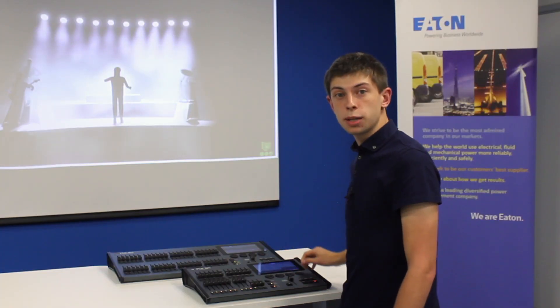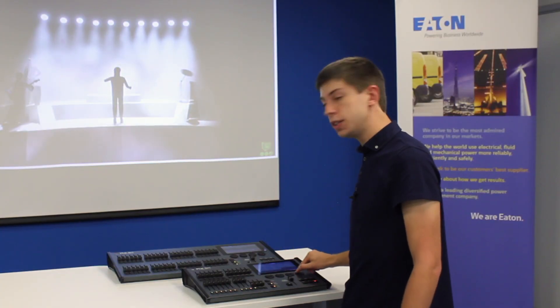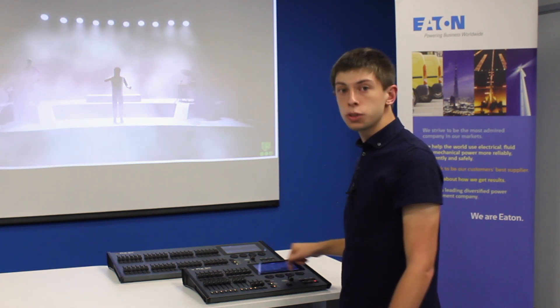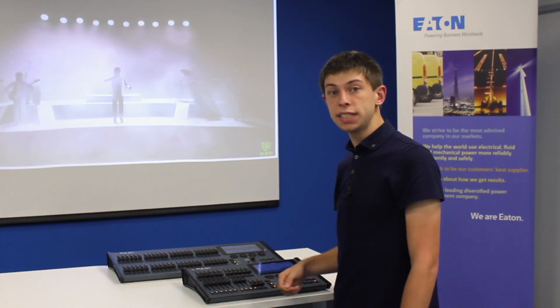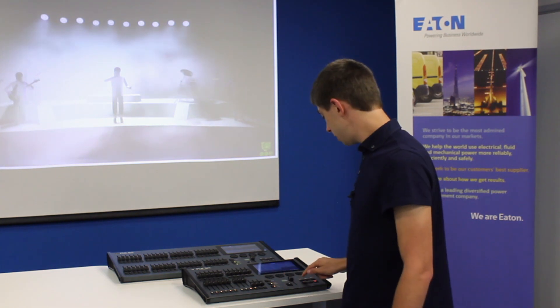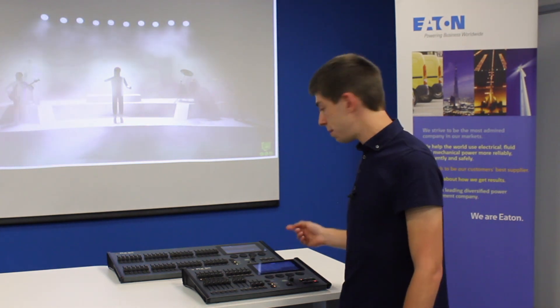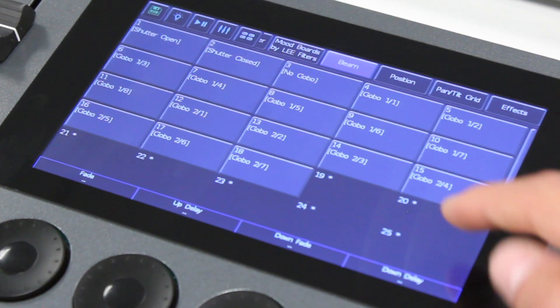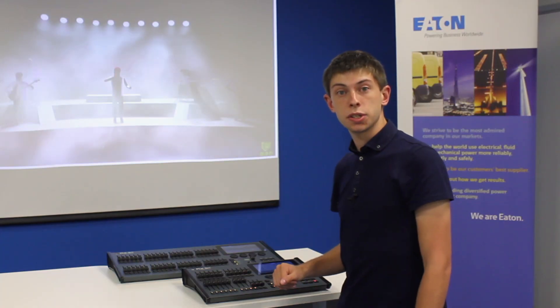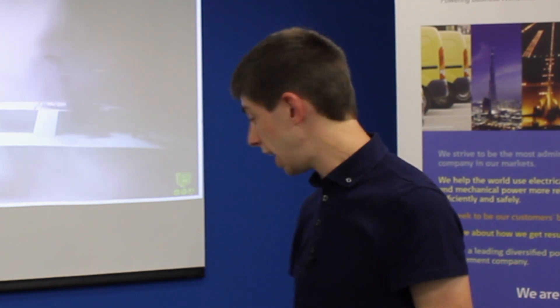If you set up a zoom size that you like and might want to use again, you can store that as a beam shape palette. This is done in exactly the same way we did a position palette — press record and then tap an empty beam shape palette marked with an asterisk. That zoom is then stored and you can use it later. To learn how to record beams, positions and effects into playbacks, see our later videos.